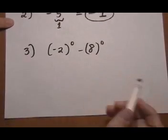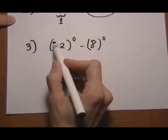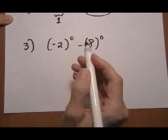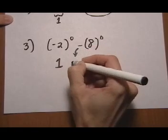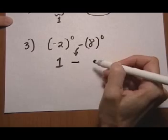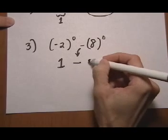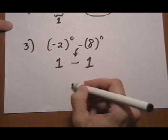And number 3, the minus 2 is in parentheses, so the entire thing to the zero power gives us 1. And then this sign in the middle, the subtraction just tags along. And then 8 is to the zero power, so 8 to the zero is 1. So we get 1 take away 1 or zero.